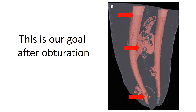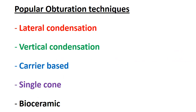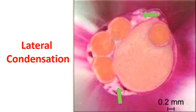This is our goal. Root canal morphology is very difficult to predict, as shown by a study by Jardel Francisco, which showed a lot of variations in pulp anatomy. We have many obturation techniques: lateral canal condensation, vertical condensation, carrier-based, single cone, and bioceramic lateral condensation.